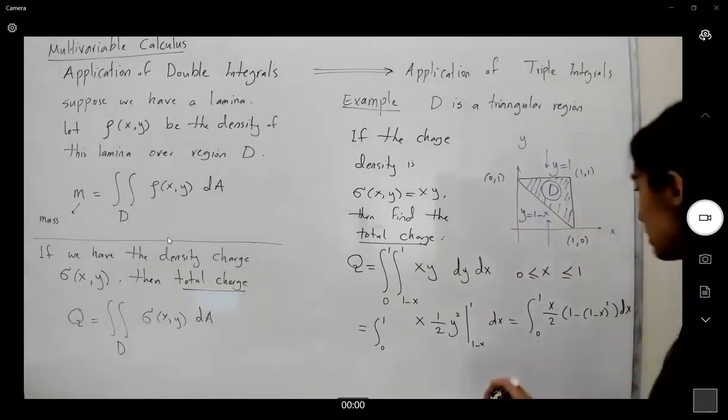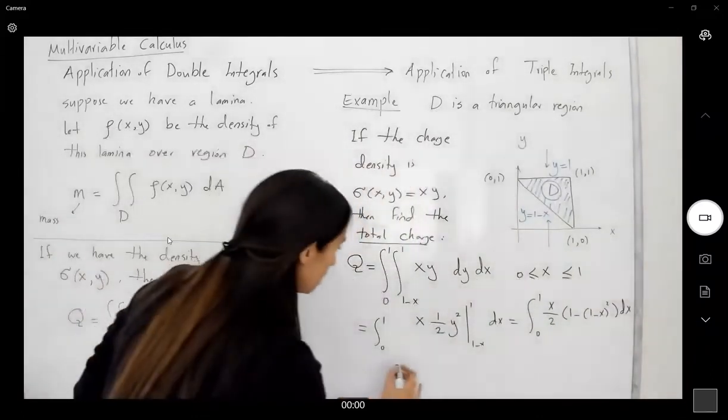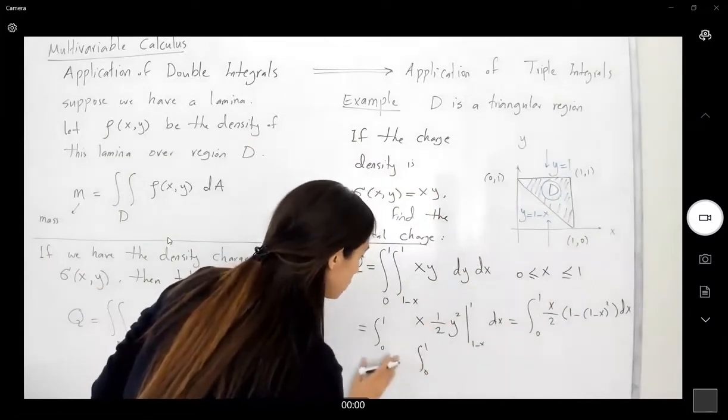This is equal to integral 0 to 1, x divided by 2, times [1 minus (1 minus x) squared] dx. Let's write this in a standard form, simplify this as much as we can. It helps us to calculate the integral easier.